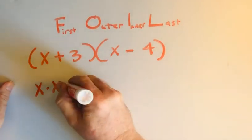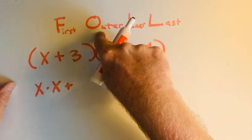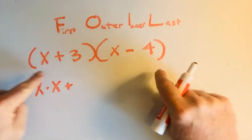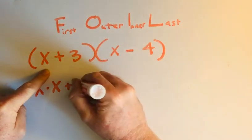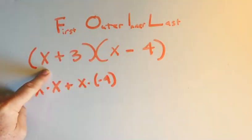Next, I'm going to add the outer terms, so outside, whatever's on the outside, that's x and minus 4. So that's x times negative 4.